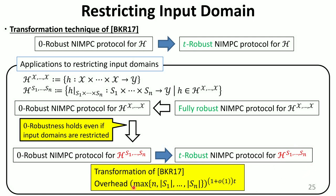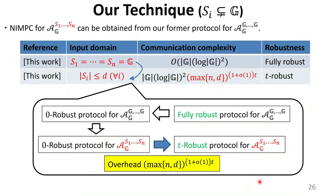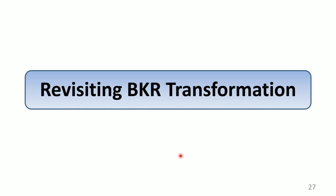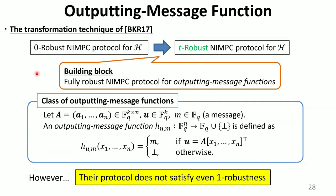This involves some overhead in communication complexity. We can apply our previous technique to abelian programs, where the overhead comes from applying their transformation. So far, we have used the transformation proposed by Benhamouda et al. In this work, we revisit it and reveal that their original transformation has a security issue. We give a brief summary of our security analysis. Their transformation needs, as a building block, a fully robust NIMC protocol for what they call outputting message functions.